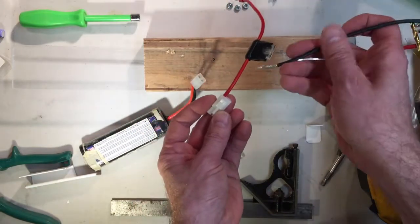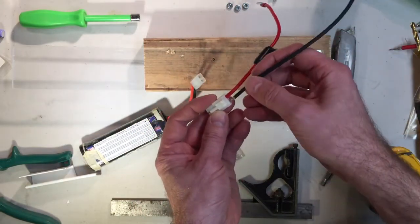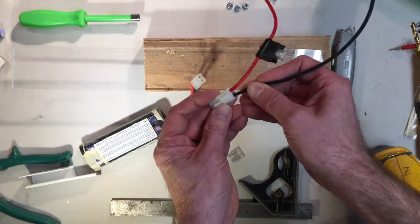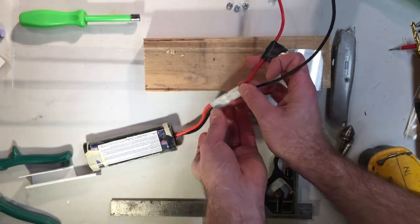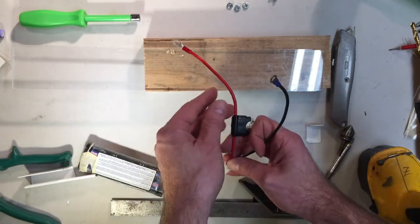Do the same thing for the ground wire or the negative terminal wire. Push it in, makes a good connection. So now when I plug this in, it'll bring power out to these two ring terminals right here.